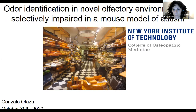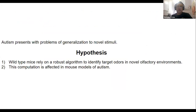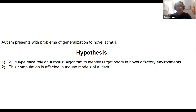Thank you very much for the introduction. Autism presents with problems of generalization to novel stimuli. For example, a person with autism can recognize dogs, but if you present them with a dog in an unusual context they might think it's a cat — that's described by Temple Grandin, the autism advocate.